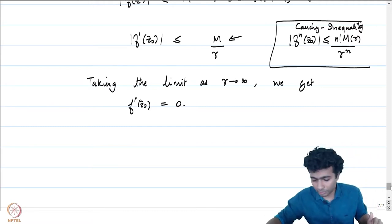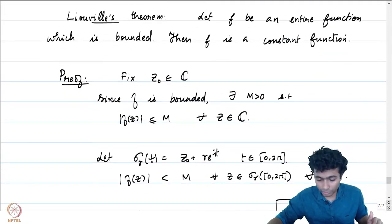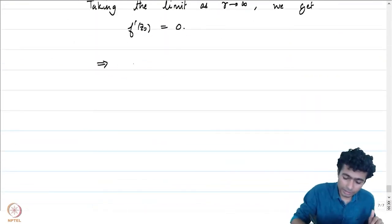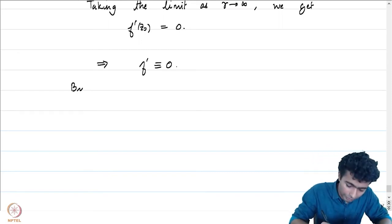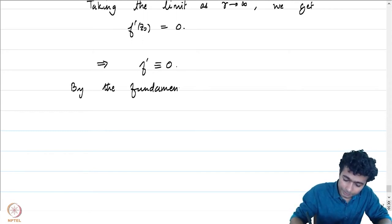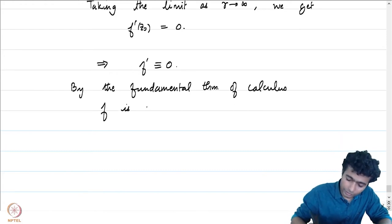Since |f'(z₀)| = 0, we have f'(z₀) = 0. Our choice of z₀ was arbitrary, which implies that f' is identically equal to 0. By the fundamental theorem of calculus, f is a constant function.